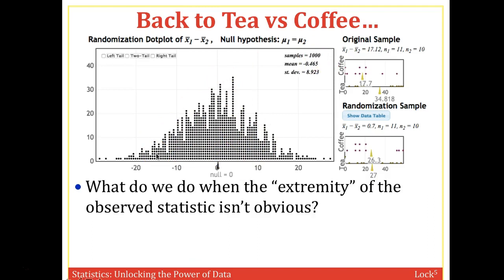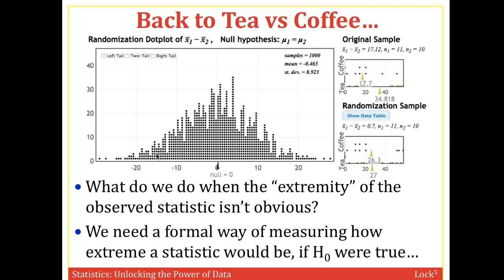So what do we do when the extremity of the observed statistic isn't obvious? We need a formal way of measuring how extreme a statistic would be if H0 were true. The null hypothesis is that mu1 equals mu2 — there's no difference in the immune response — so that's why the distribution is centered around zero.